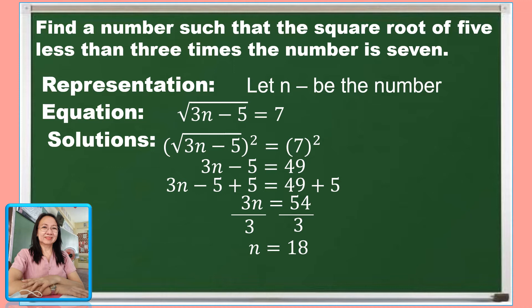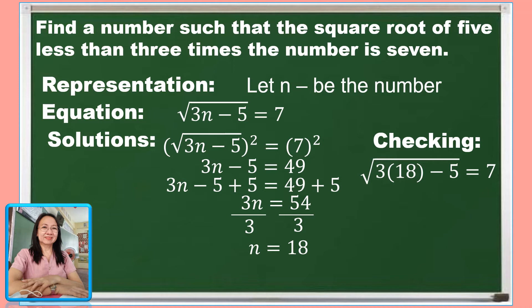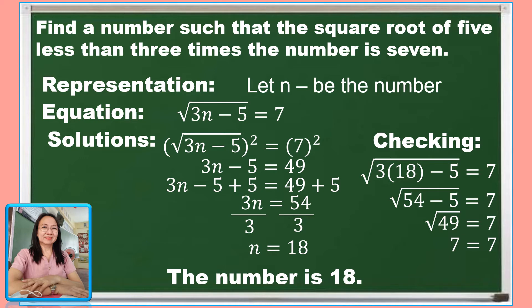Similar to solving equations, let us do the checking. Substituting 18 for n: the square root of 3 times 18 minus 5 equals 7. So the square root of 54 minus 5 equals the square root of 49, which is 7. And 7 equals 7 — that is a true statement. We can now conclude that the number is 18.